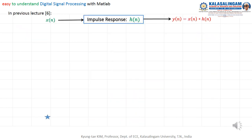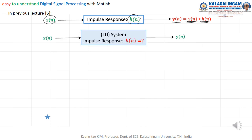In the previous lecture, I explained that we know the input x(n) and the impulse response. Then we can get the output — the output is the convolution of x(n) input and impulse response. Today's topic is: we know x(n) and y(n), but we don't know h(n). How to find it?